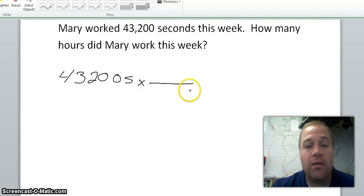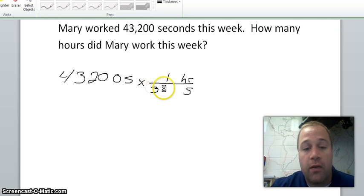We want to cancel out the unit seconds since that's what we're starting in. So we're going to put seconds down below. And we're asked how many hours did Mary work, so we're going to put hours up top. Always ask yourself what's bigger, an hour or a second? Obviously an hour is bigger so we do one. Now we need to know how many seconds are in an hour. There are sixty minutes in an hour, each with sixty seconds. So we do sixty times sixty and we get thirty six hundred seconds.